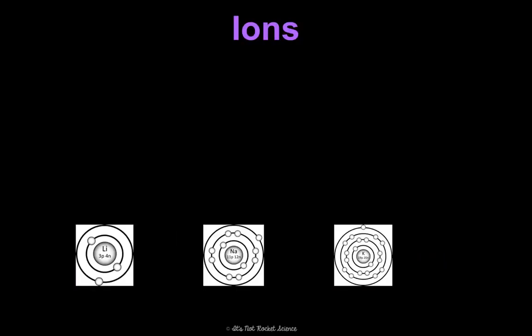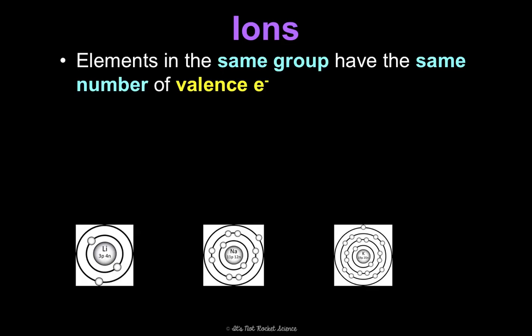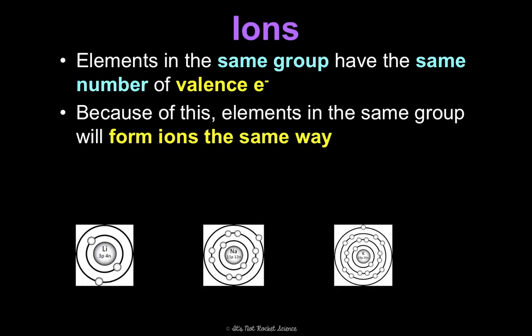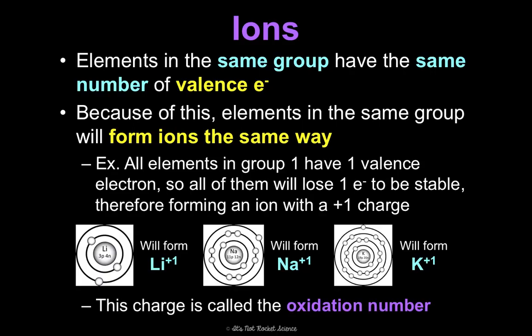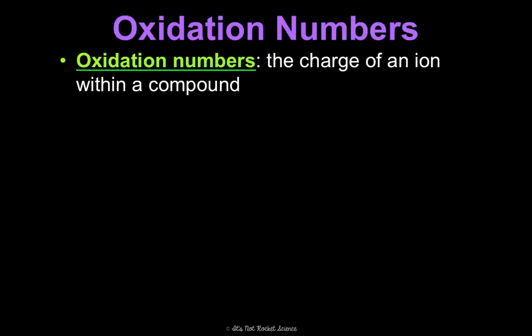You may be thinking this is really tricky to remember, but luckily there is a nice pattern. Elements in the same group all have the same number of valence electrons, so elements in the same group are going to form ions the same way. Looking at group one elements — lithium, sodium, potassium — they all have one valence electron, so they'll all lose one electron to be stable and form an ion with a +1 charge. This charge they share in common as a group is called the oxidation number — the charge of an ion within a compound.